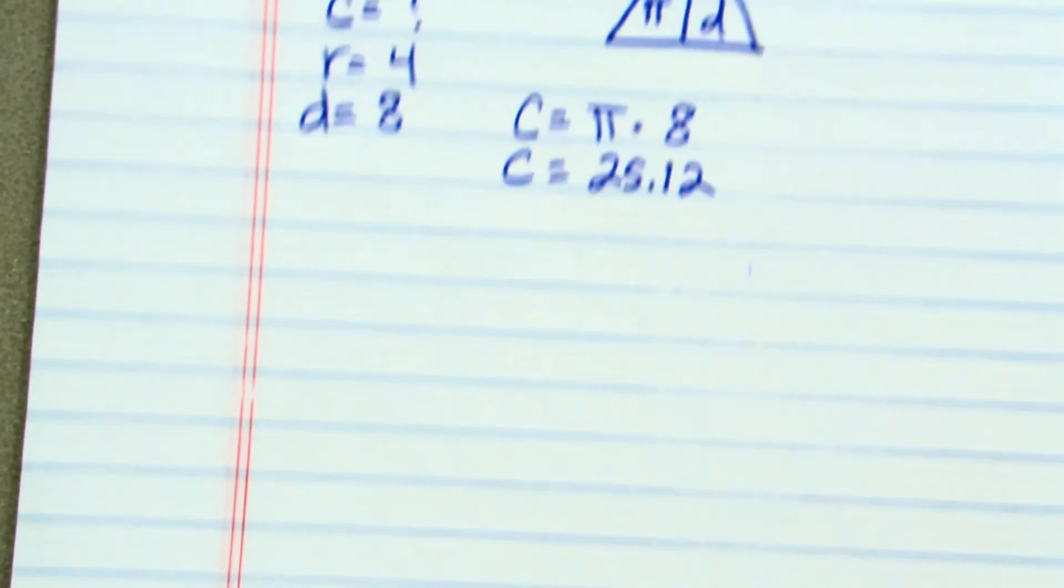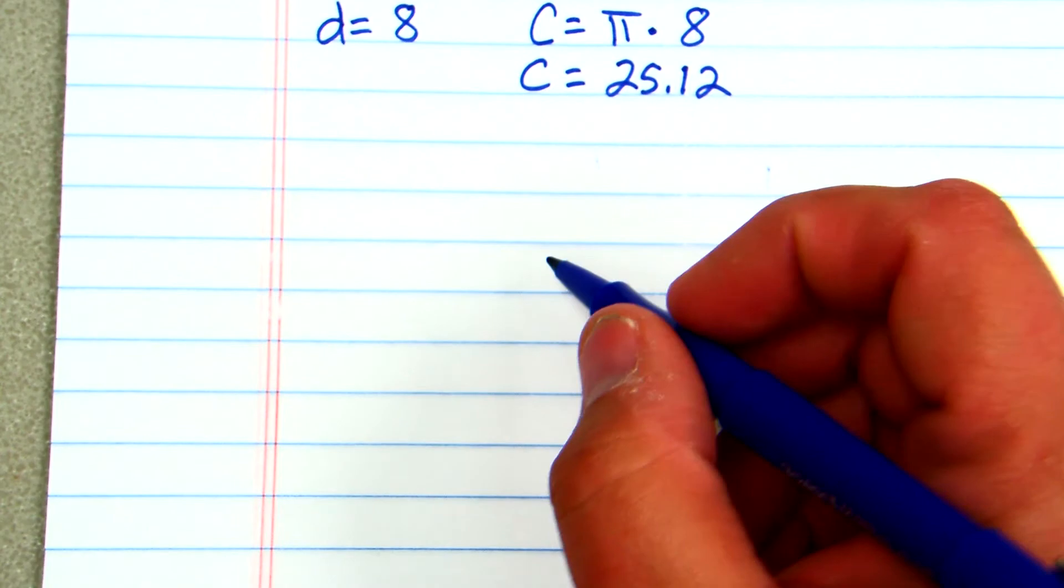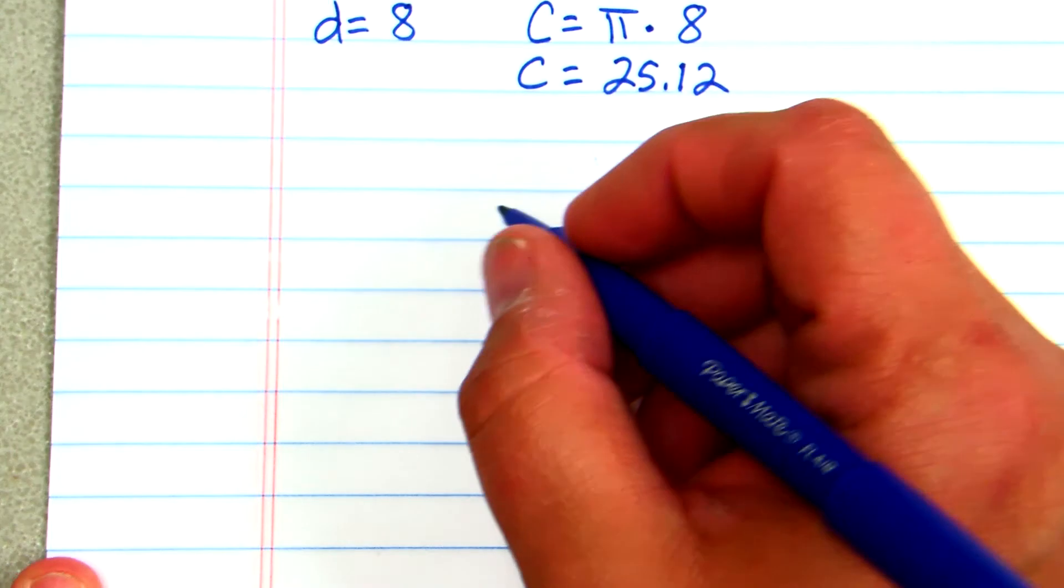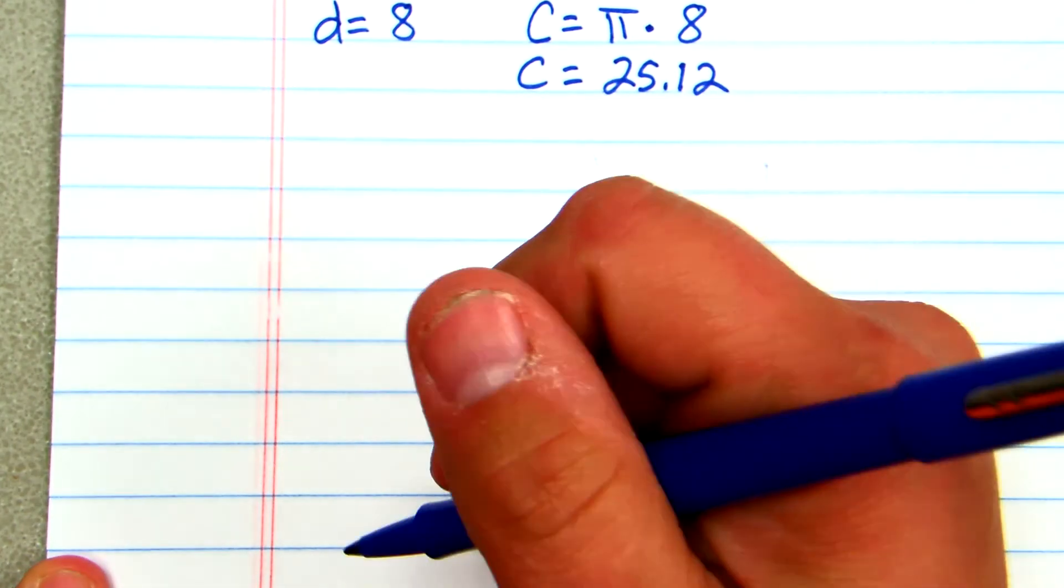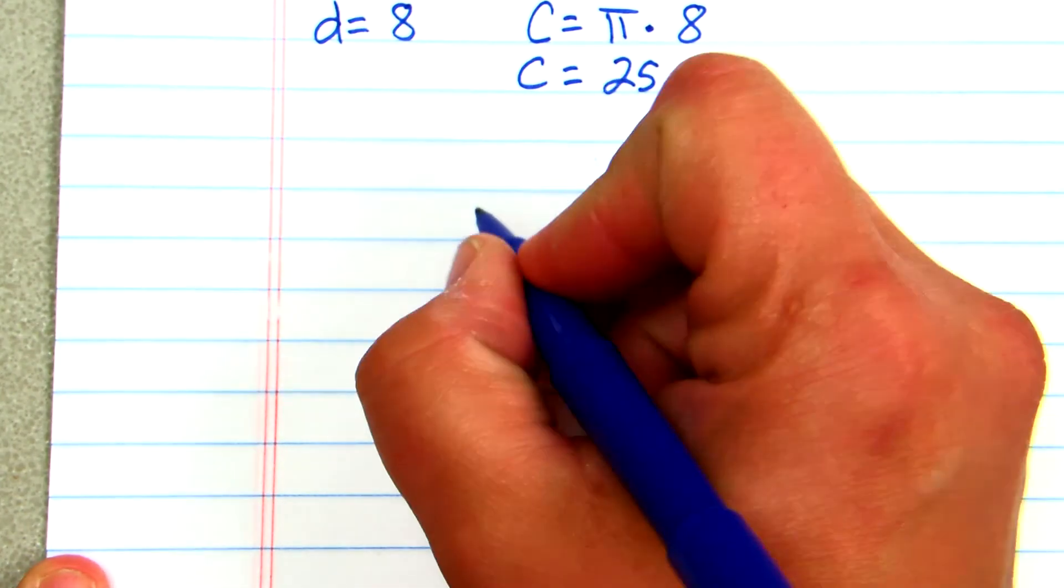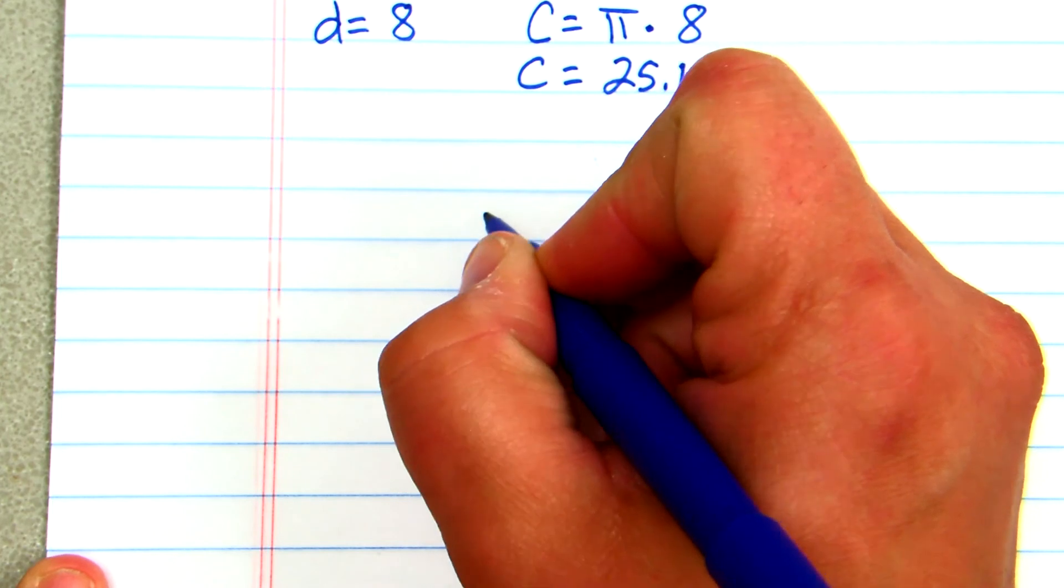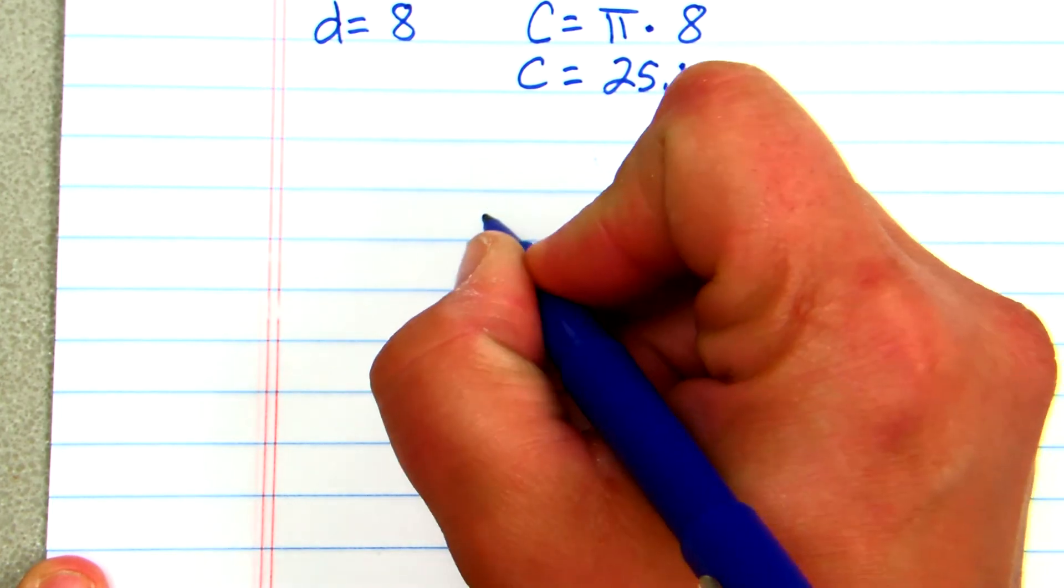All right, the last step is solving an inequality. And I'm going to give you one where it has to deal with the one rule about inequalities. You work them just like you would a normal equation, except for the fact that if you multiply or divide by a negative number, you change the direction of the sign.